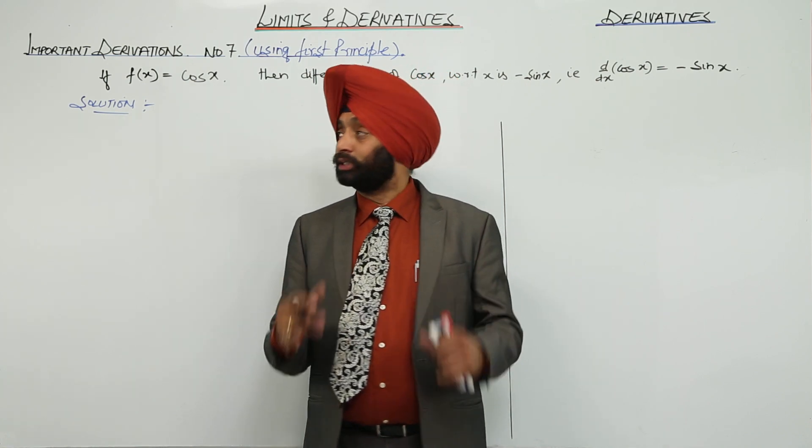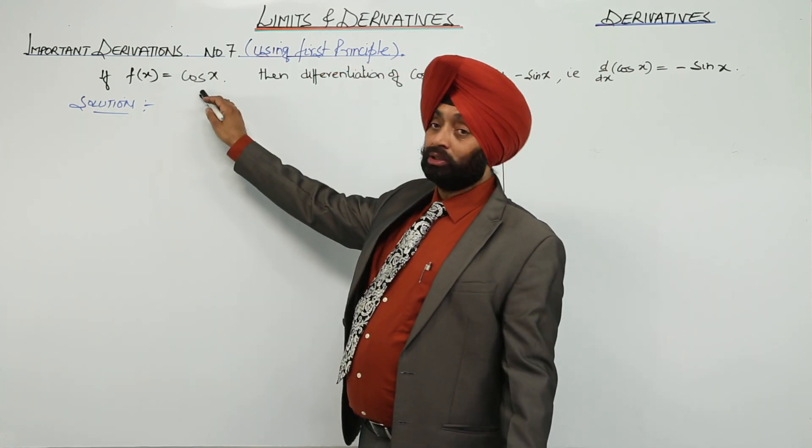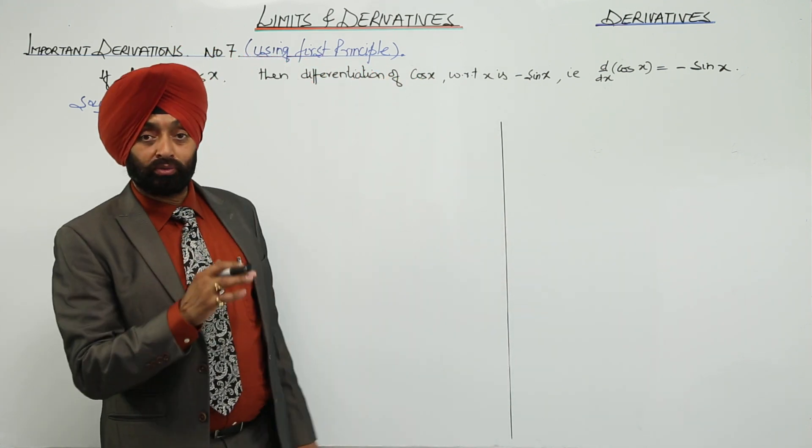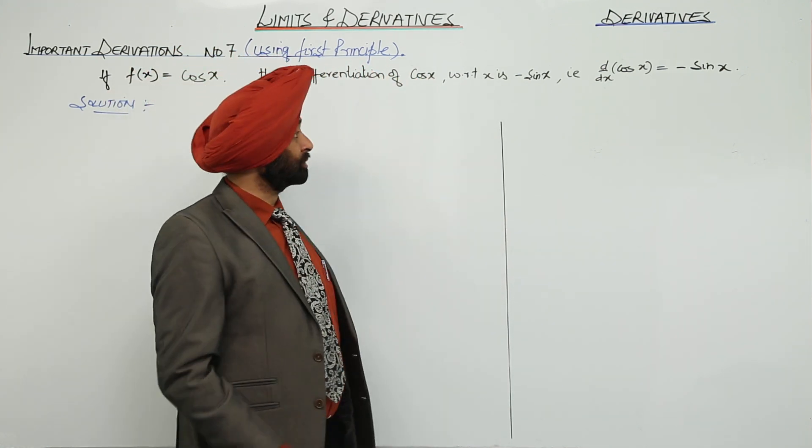Now, derivative for cos x. If f(x) equal to cos x, then differentiating with respect to x, d by dx of cos x is negative of sin x.